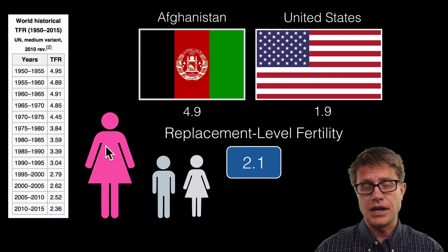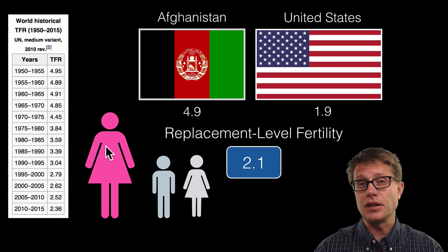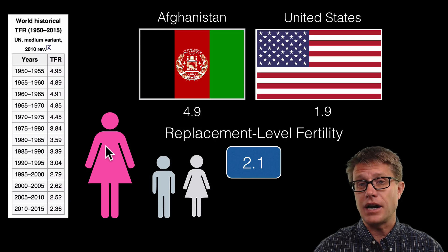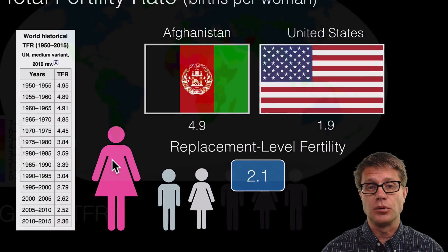But due to mortality rate it has to be a little bit higher. And in developing countries it has to be even a little bit higher than that. To have a stable population.